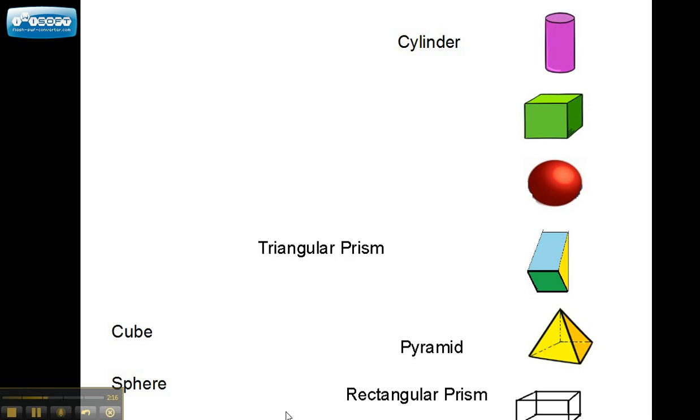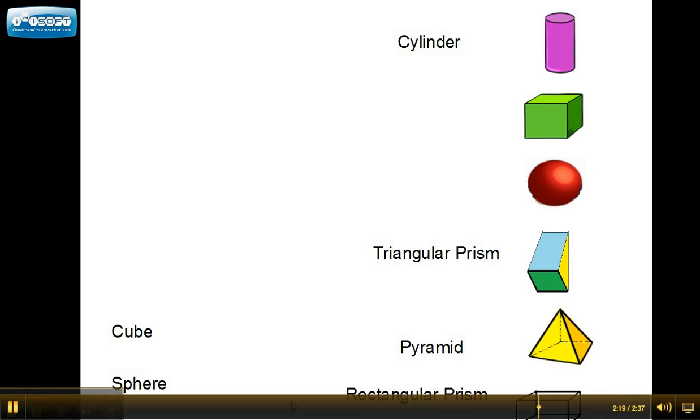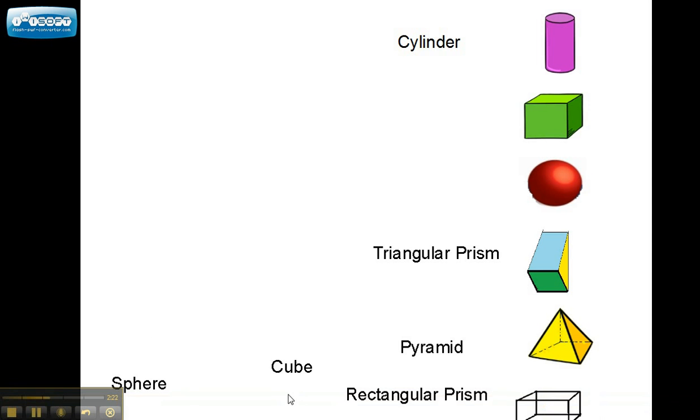Triangular prism? Where is it? Ah, right across. Where's the cube? Down there? Nope. Up there. And the sphere?